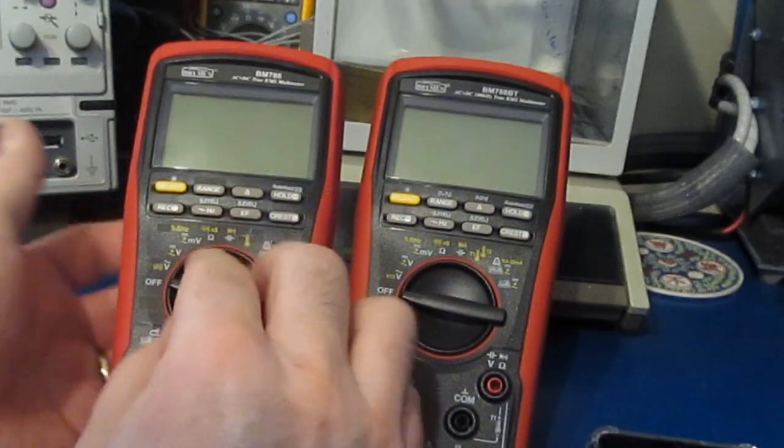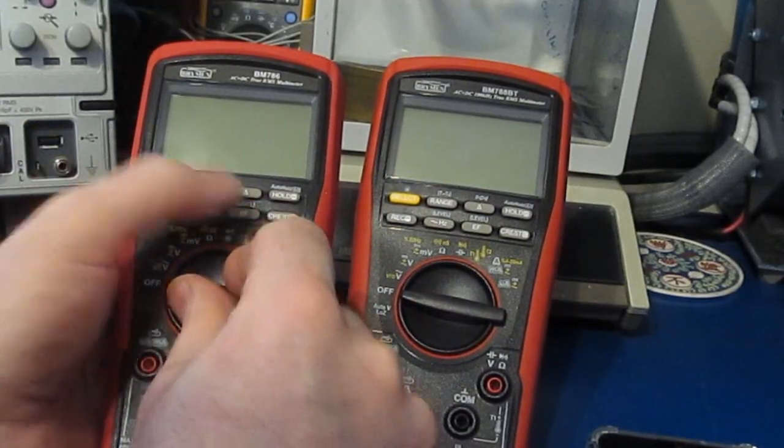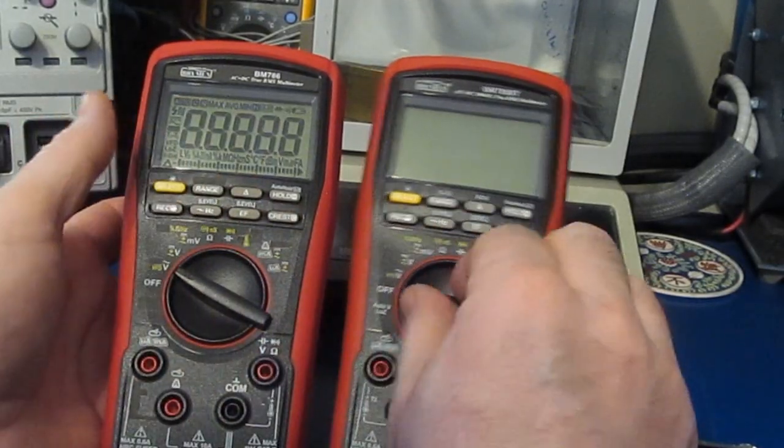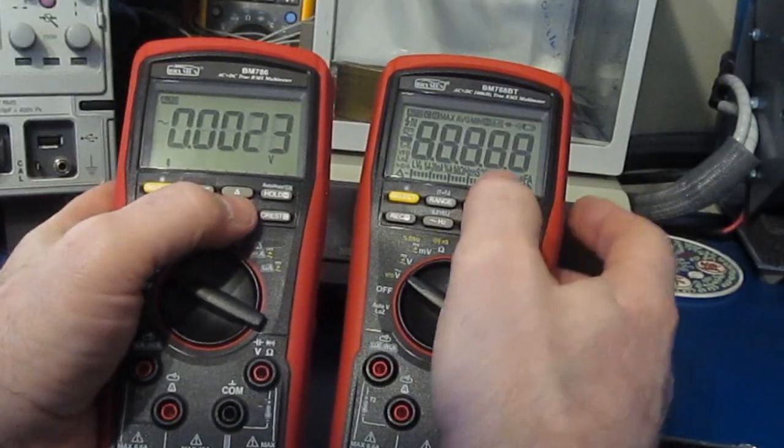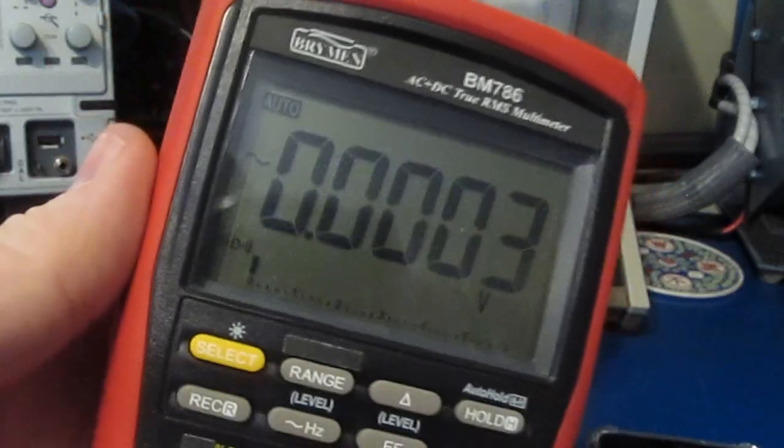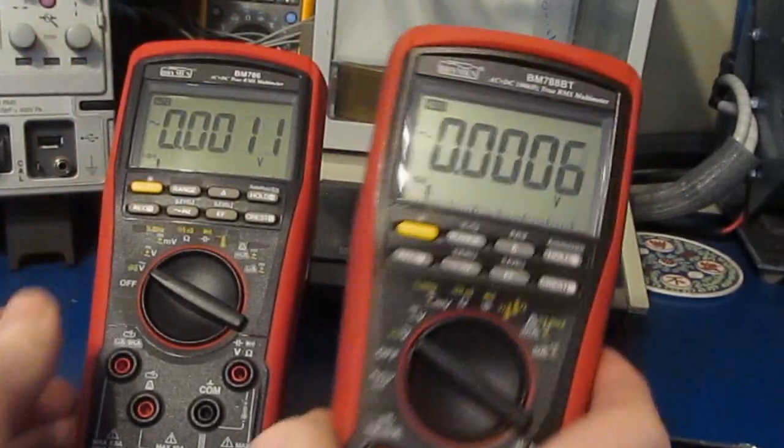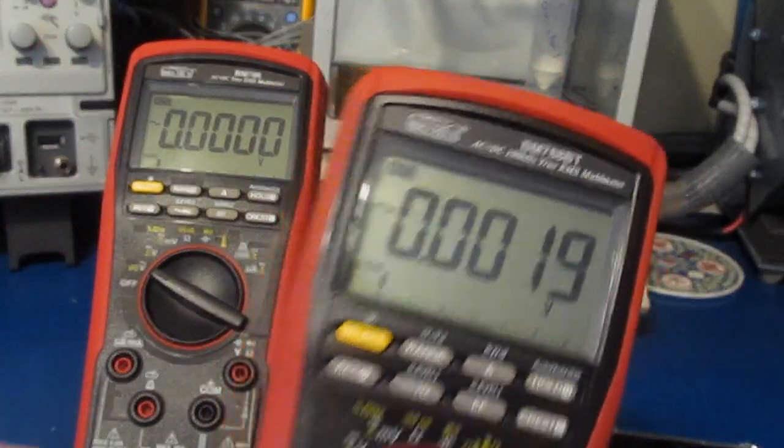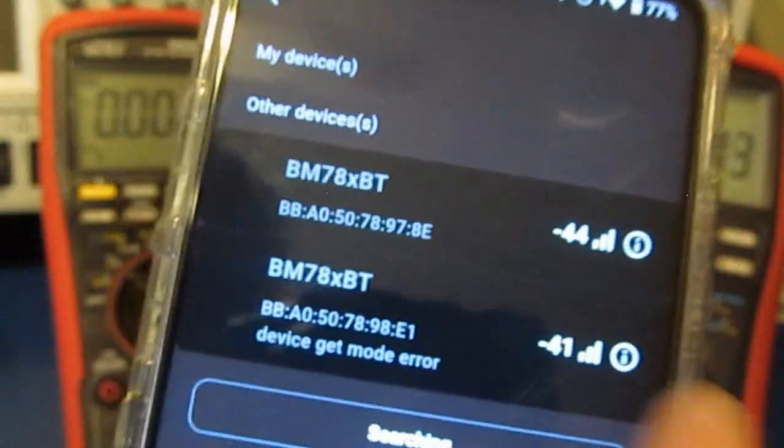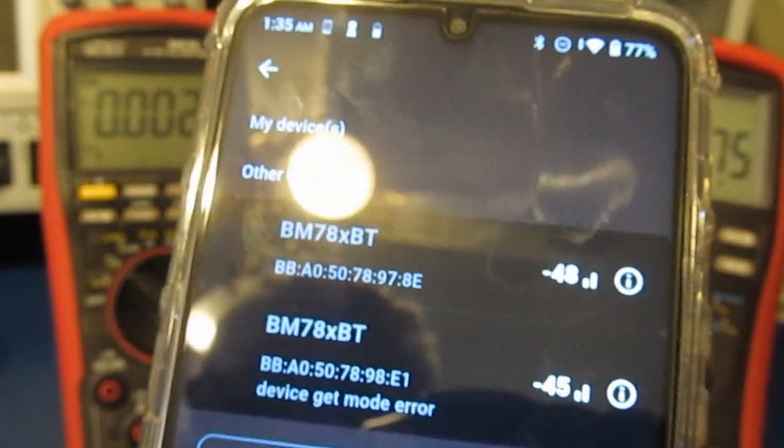If we turn on the Bluetooth, that will show up on the camera right here. You can see the icon where the Bluetooth is enabled, and the same thing for the meter on the right. You can see they both identified to be the same device. They do have a different Mac address.